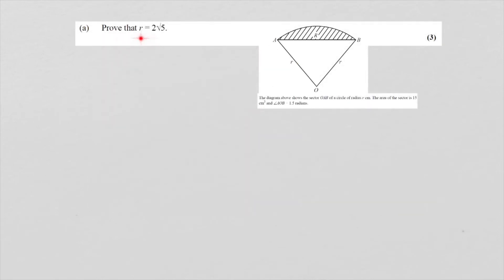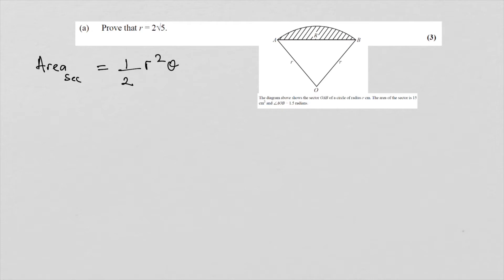Prove that the radius R equals 2 root 5. We know the area of a sector equals one half R squared theta, and that area is 15. So I have one half R squared theta equals 15. Multiplying both sides by 2, you get R squared theta equals 30.